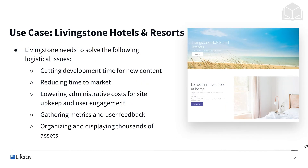Currently in our story, Livingston needs to solve the following logistical issues. They want to cut development time for new content and reduce time to market overall, lower the administrative costs for site upkeep and user engagement, see how they can be more efficient, gather metrics and user feedback, and organize and display thousands of different existing assets.